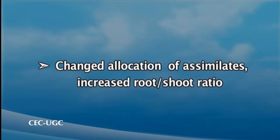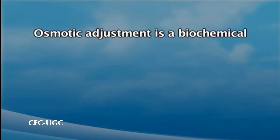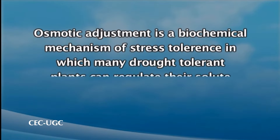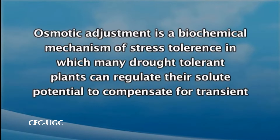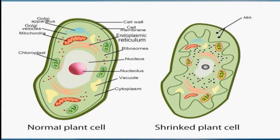These responses are together with changed allocation of assimilates and increased root-shoot ratio besides having characteristic morphogenetic alterations. One of the fundamental ways through which plants adapt to water stress at the cellular level is osmotic adjustment. Osmotic adjustment is a biochemical mechanism of stress tolerance in which many drought-tolerant plants can regulate their solute potential to compensate for transient or extended periods of water stress. Osmotic adjustments occur when the solute concentration within a plant cell increases to maintain a positive turgor pressure.